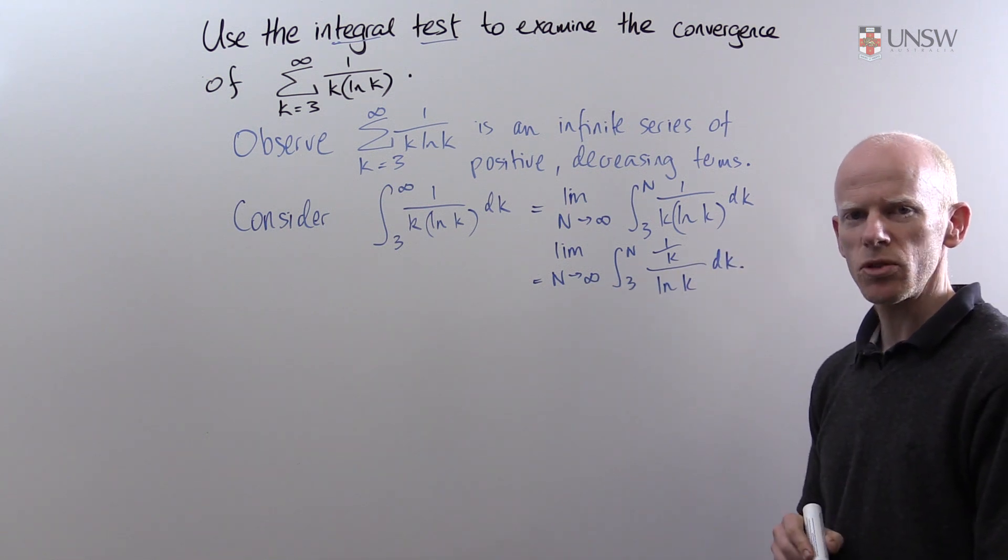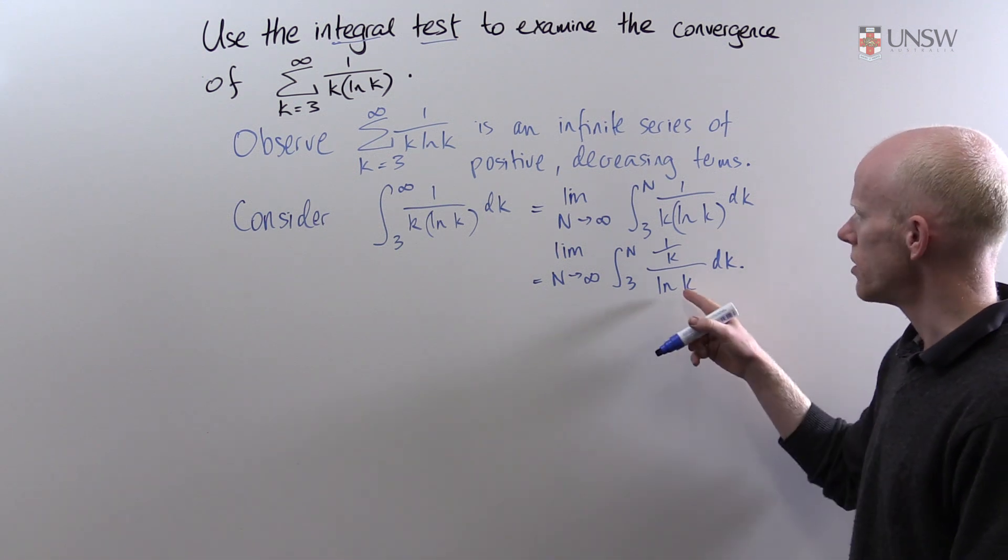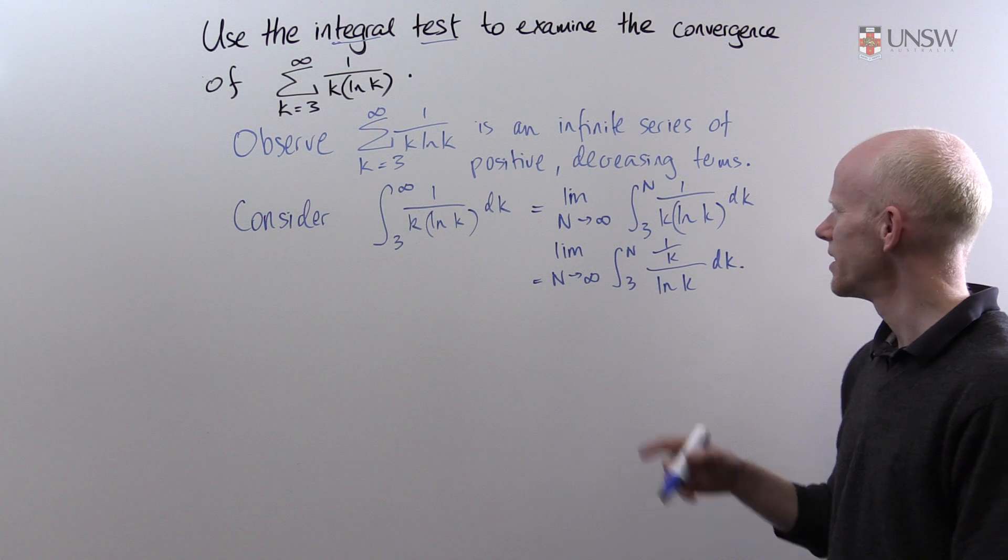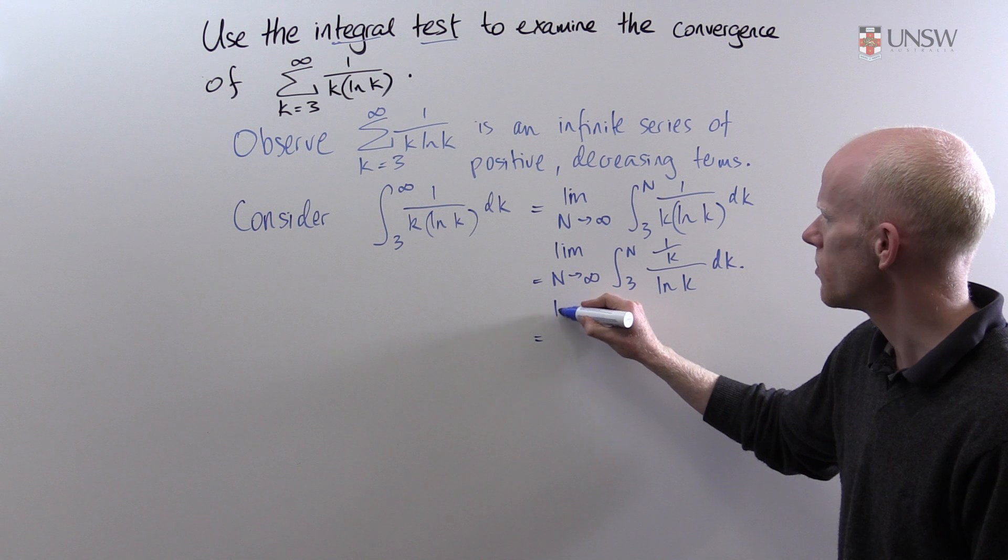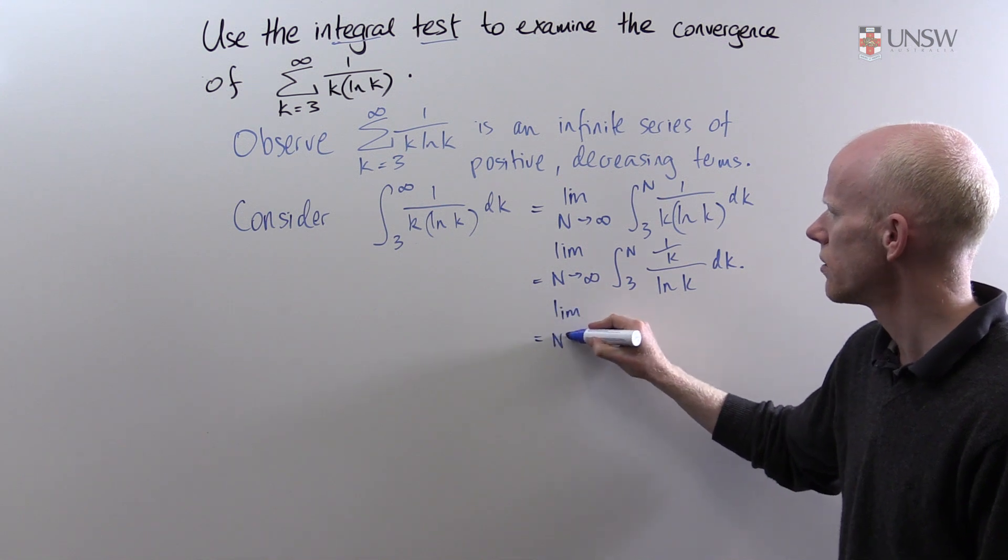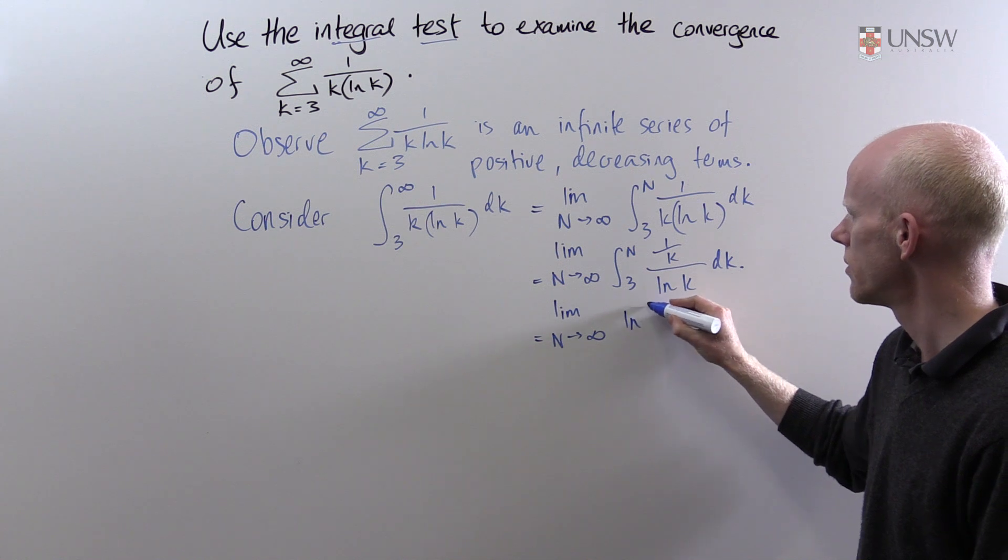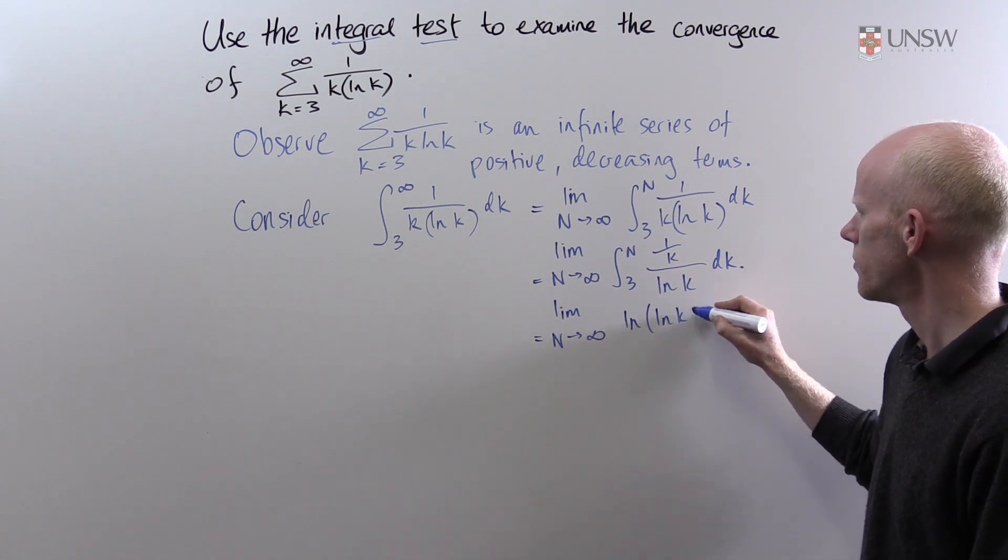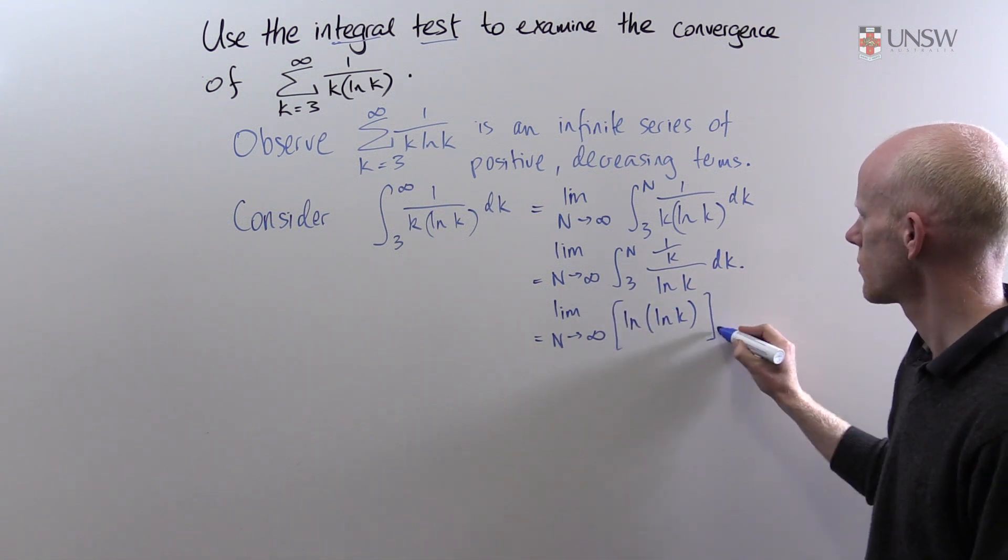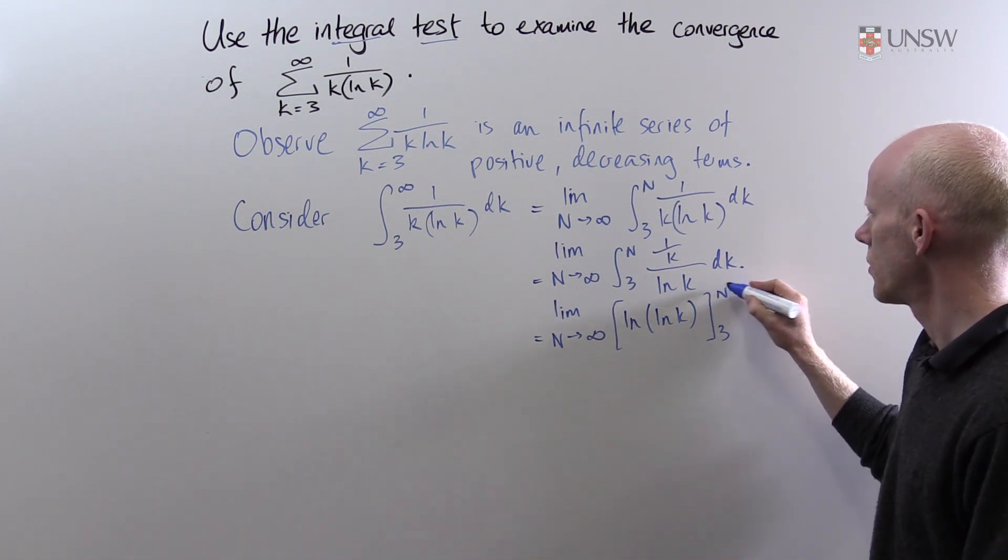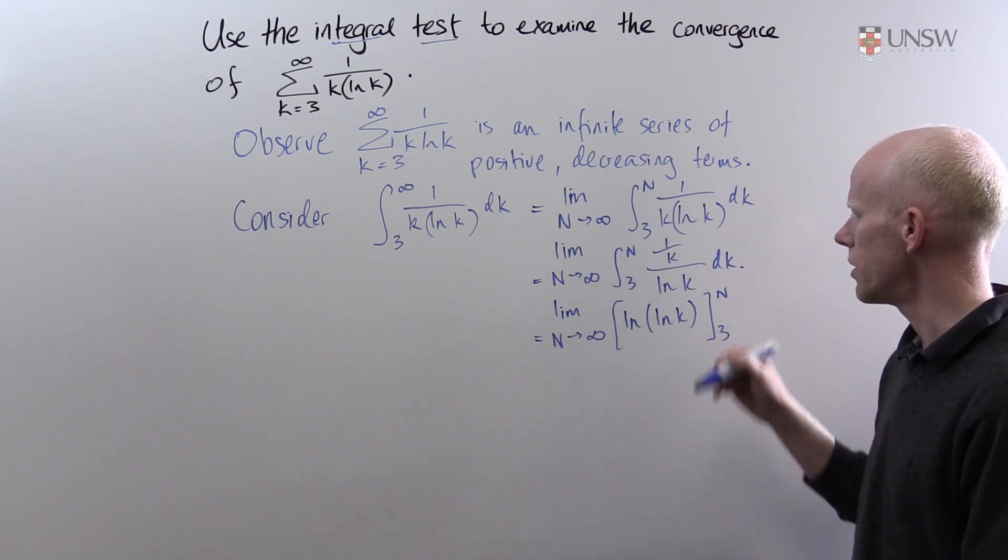We should now be able to evaluate this integral by observation, noting that the derivative of the function in the denominator is 1 over k which occurs in the numerator. So this integral becomes the limit as n tends to infinity of log log k evaluated where k is from 3 to n.